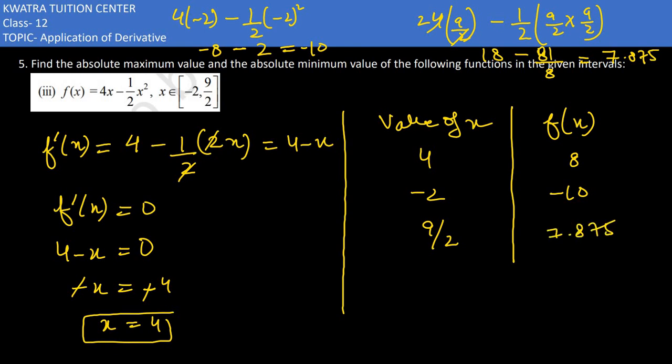So from this we can clearly understand ki absolute maximum humara kis pe hai? It is at 4. Aur minimum kitna hai humara? It is at minus 2. So dono values aapke saamne hain. x is equal to 4 pe aapka absolute maximum mil raha, aur minus 2 pe aapka absolute minimum mil raha.